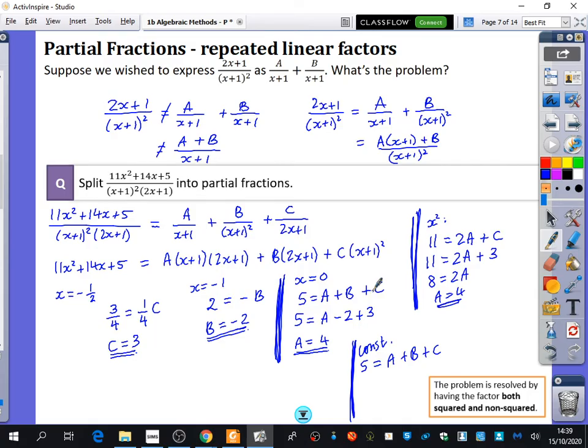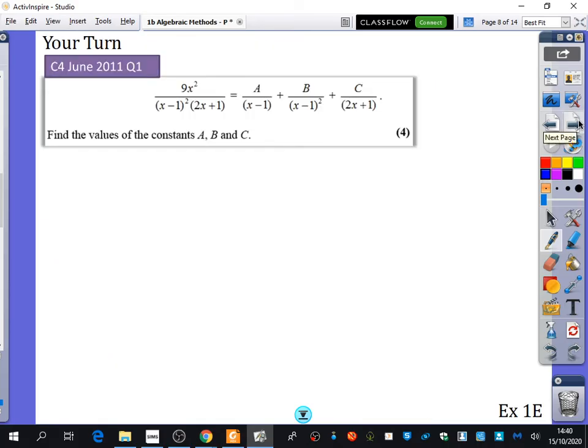So really, you can use a mixture of things. Generally, the way I find that this works best is to do some substitution, and then either do some more substitution with all of the things that you've got, picking a sensible value like 0, or doing some comparing of coefficients. OK, all of these things work. They don't have to be seen as separate methods. They can be done together. So there is a question for you guys to have a go at here to find the values of the constants A, B, and C. I'm going to do this slowly on the board, and then we're just going to pick some questions from exercise 1E, and that's us nearly finished on this topic. There's only a tiny bit left after this.